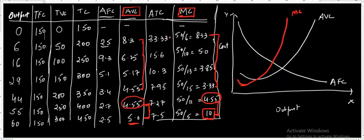Now what happens to the average total cost curve? The average total cost first falls and then rises, as we can see. So the average total cost curve first falls and then rises. This is the behavior we observe from these cost curves.